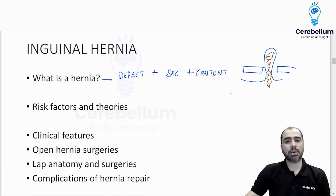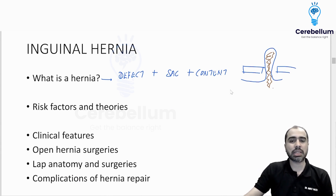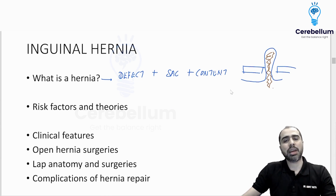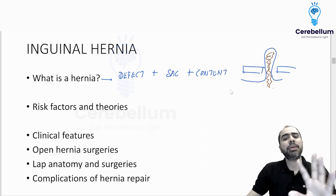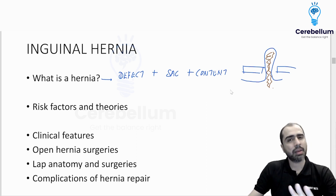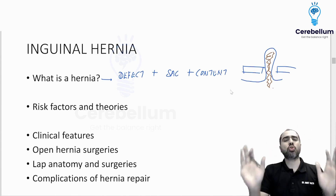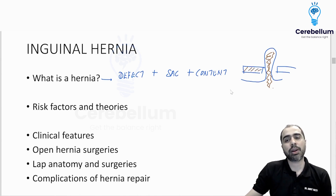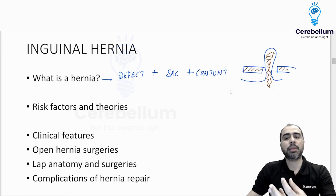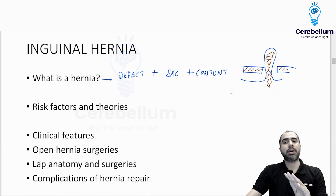There are very few hernias in the body where some of these components are missing. Like in some hernias there may not be a sac — there may just be a defect. For example, in epigastric hernia there is only a defect and many times there is no sac. They are still called hernias, but as a rule most hernias will have a gap in the muscle or a defect, peritoneum pouting as the sac, and within the sac some intra-abdominal contents.